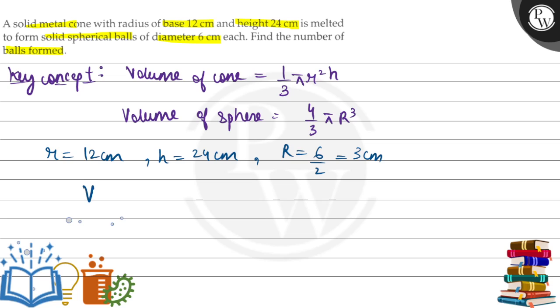So let's find the volume of cone. Vc represents 1/3 π × r, which is 12 squared, × h, which is 24. If we solve this, we will get Vc.